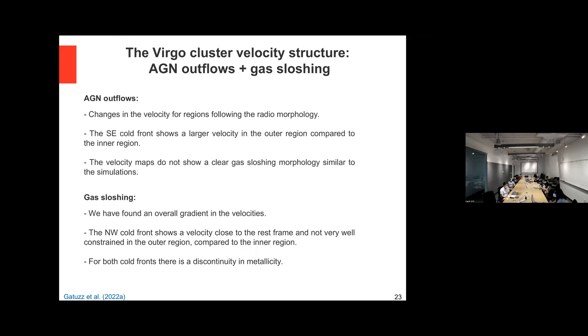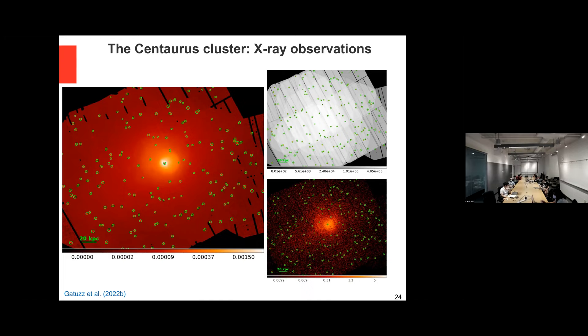We have a similar analysis for the Centaurus cluster. This is the X-ray image in the left panel — green points are point-like sources excluded from analysis. We have this cluster map showing the cluster is very well covered with several offset observations using the EPIC camera. The bottom panels show the number of counts around the iron line, so the spectra are great and the data is ready.